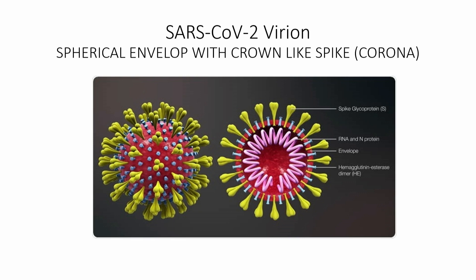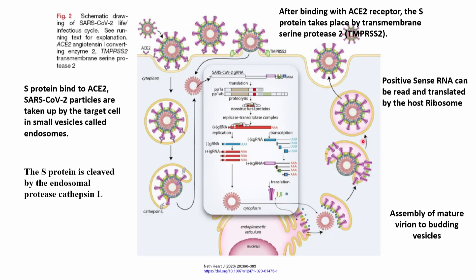Now let us understand about this virus. The virus outside the cell is known as a virion. This virus has a spherical envelope with crown-like spikes, which is why it is called corona. If we cut this spherical envelope in half, we can see that inside the envelope there is RNA complexed with N protein. Some of the structural proteins include spike protein (S), envelope protein (E), and N protein complexed with RNA.